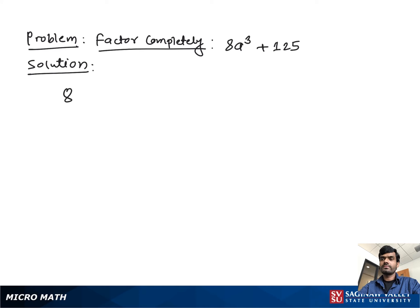Factor completely 8a³ + 125. So what do you do? You find out the common factor, but here there is no common factor. So you can write both terms in cube form to make it easy to solve.